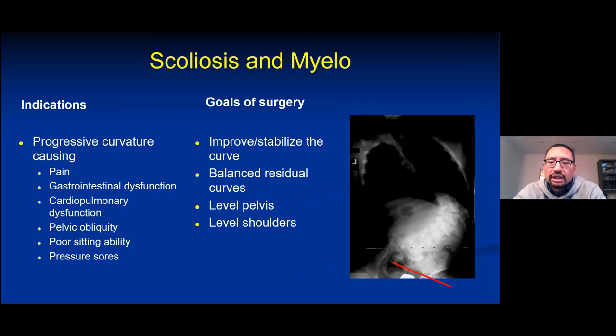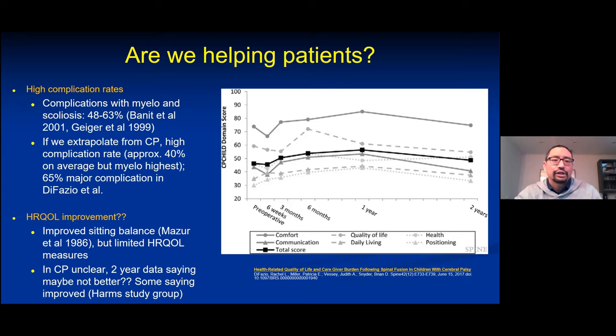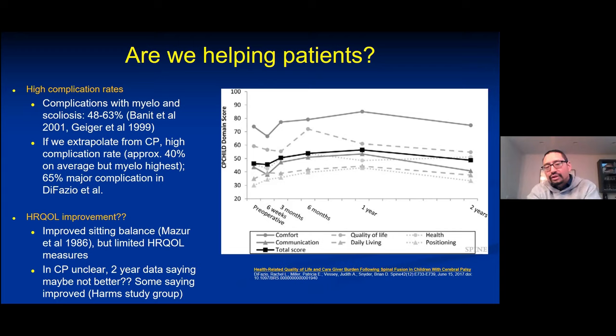The goal is to instrument these patients so they don't progress — ideally making them more comfortable and easier to care for. But are we truly helping them? That is somewhat controversial. Myelo patients have a high complication rate: 48 to 63% of patients in various series experience post-op complications. In CP populations it's similar — up to 65%. So the question remains whether we are really benefiting them.